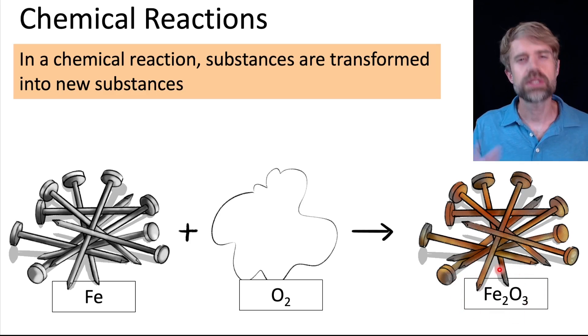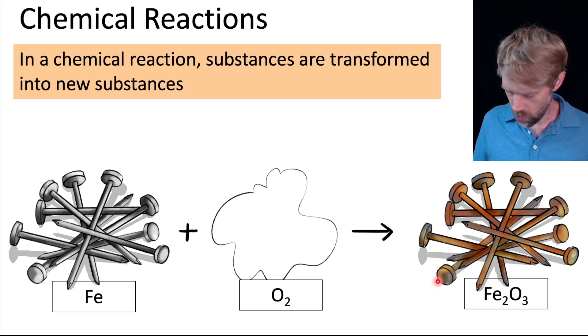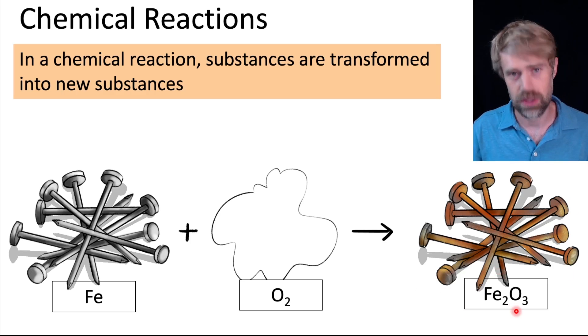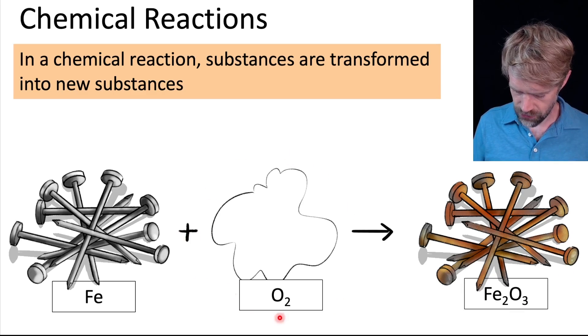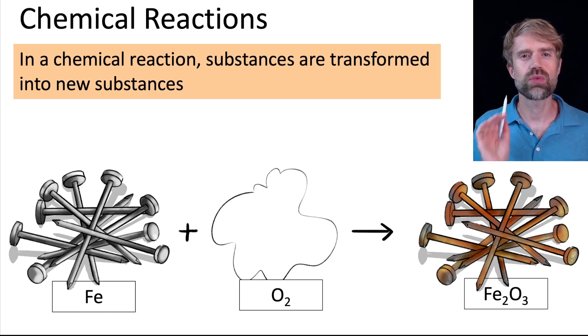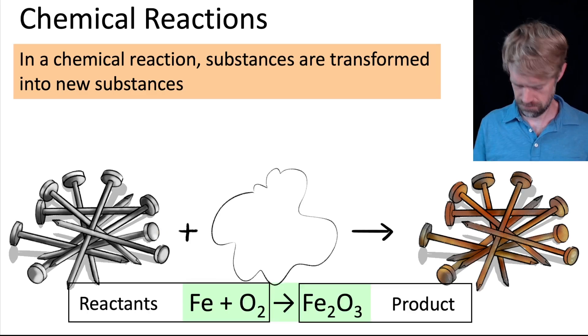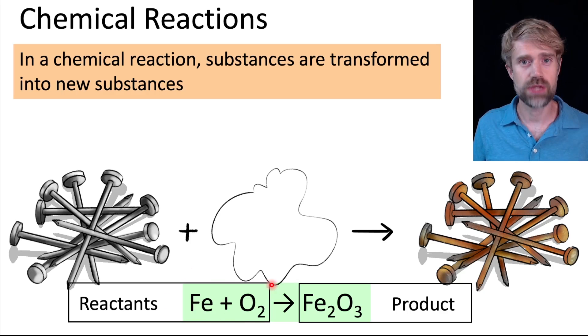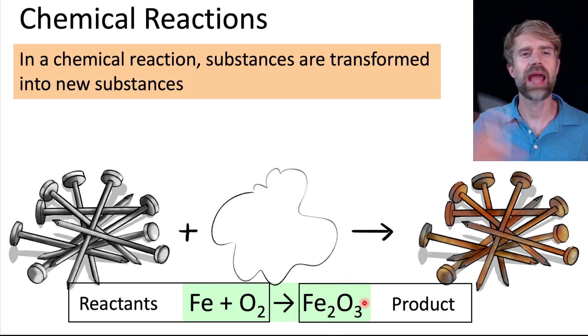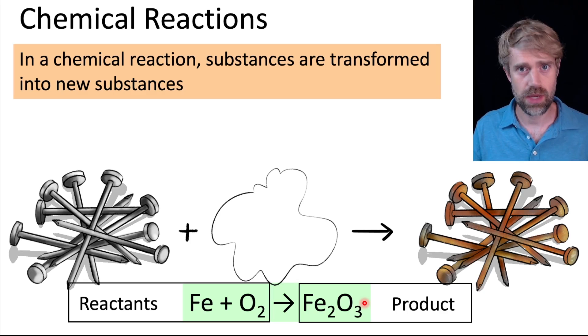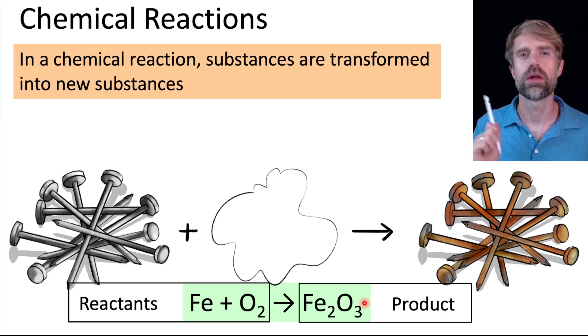Oh, and by the way, the TEAS would never expect you to just know this formula for rust. That's not something that you need to have memorized. But you should memorize that O2 is the formula for oxygen gas. And you should know that iron has the symbol Fe. Anyway, how would this reaction look in a chemical equation? There you go. Fe plus O2. Then we have an arrow, which means react, to form Fe2O3. I'm not going to worry about balancing here, so I'm not going to add any numbers. We're only trying to recognize a chemical reaction here and understand how they're written.